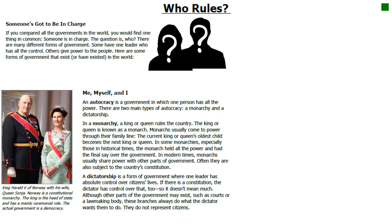An autocracy is a government in which one person has all the power. There are two main types of autocracy: a monarchy and a dictatorship. In a monarchy, a king or queen rules the country. A king or queen is known as a monarch. Monarchs usually come to power through their family line — the current king or queen's oldest child becomes the next king or queen.